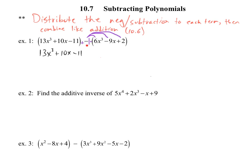And now when I do negative 1 times a positive 6x³, that gives me minus 6x³. Do you agree? Negative 1 times a positive 6 gives me negative 6.